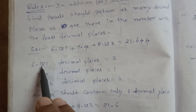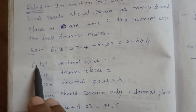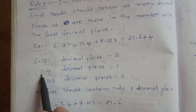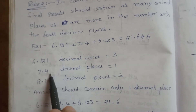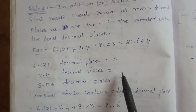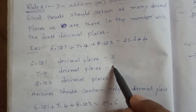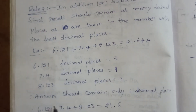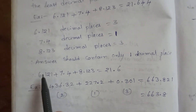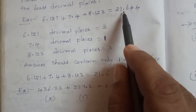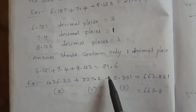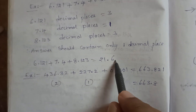For 6.121, the decimal places are 3. For 7.4, the decimal places is 1. For 8.123, the decimal places are 3. The least decimal place is 1, so the answer should contain only 1 decimal place. Therefore, the final answer is 21.6.